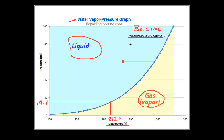Going back to the vapor pressure graph, we have just seen the process of causing water to boil by adding heat. Now, for something that isn't so familiar — by looking at the graph, we notice that it is also possible to cause the water to boil without adding any heat at all, simply by lowering its pressure. If we show that process on the graph, the line would look something like this.